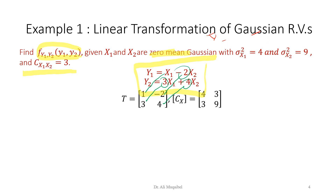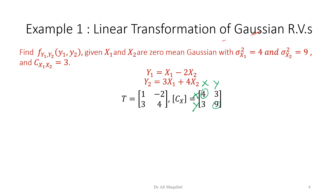Now we're ready to find the output. We can build the covariance matrix Cx from the given values. The diagonal entries are sigma-X1-squared and sigma-X2-squared, and the off-diagonal entries are the covariances, which equal 3. So they are symmetric.